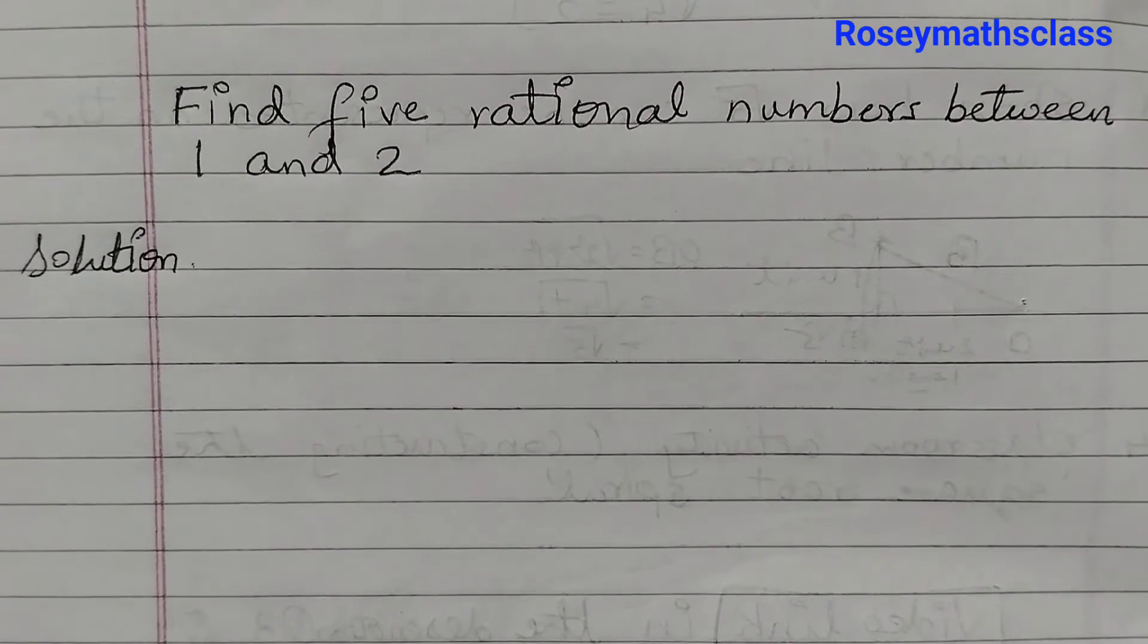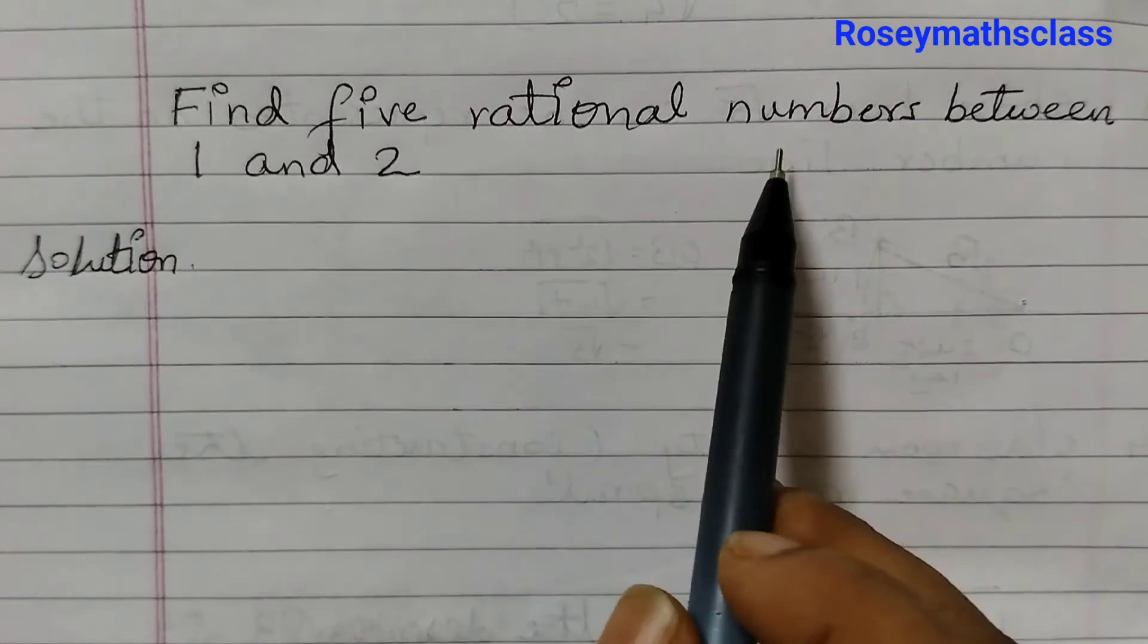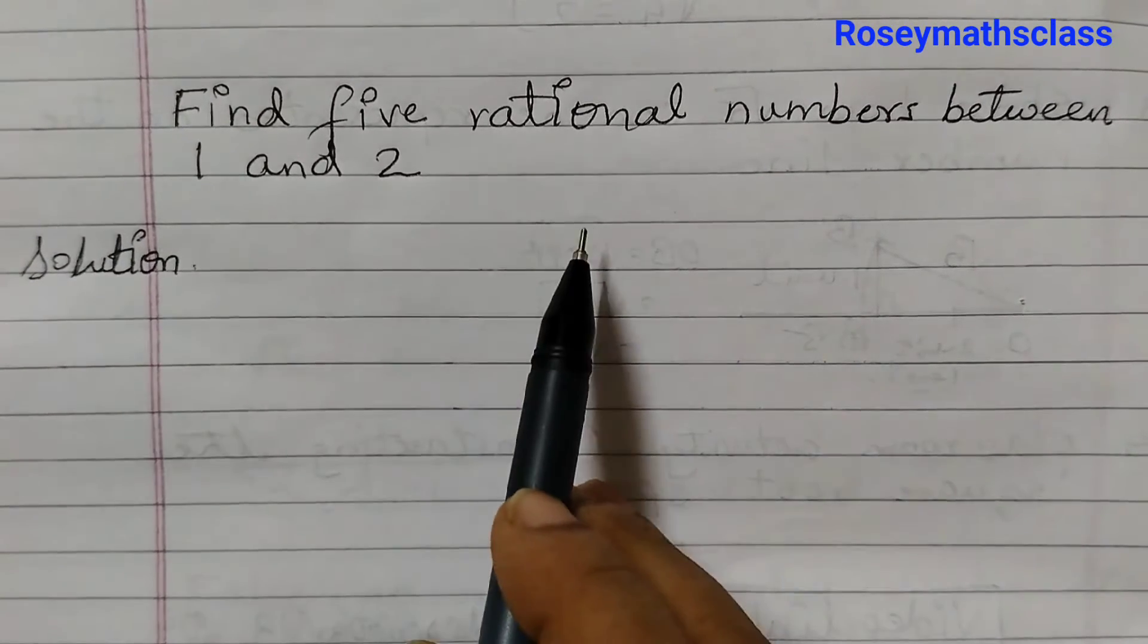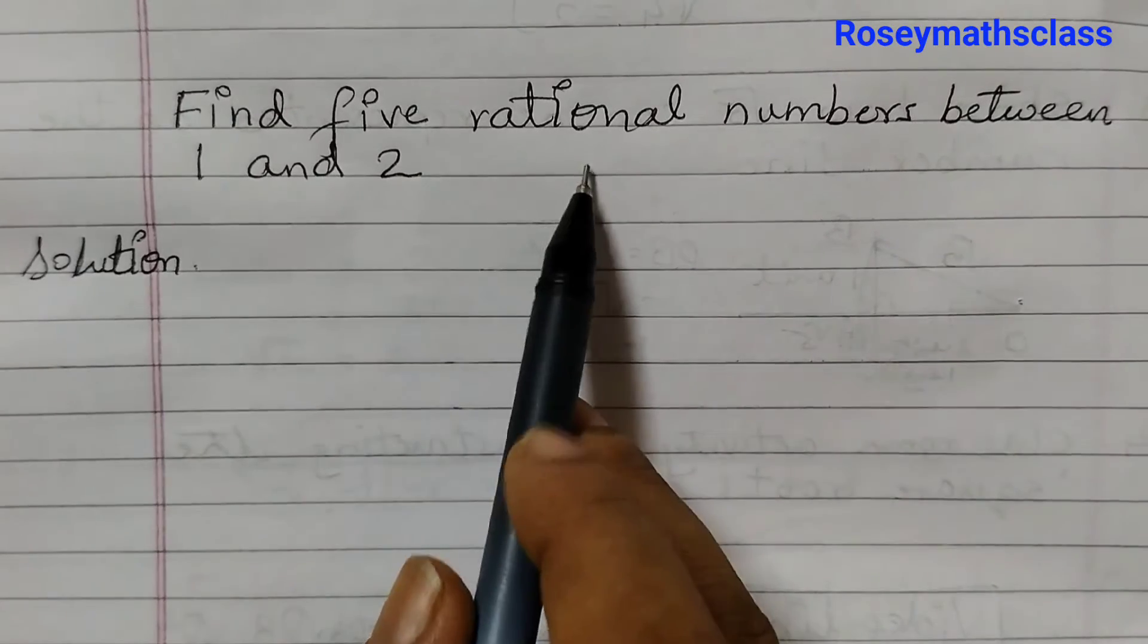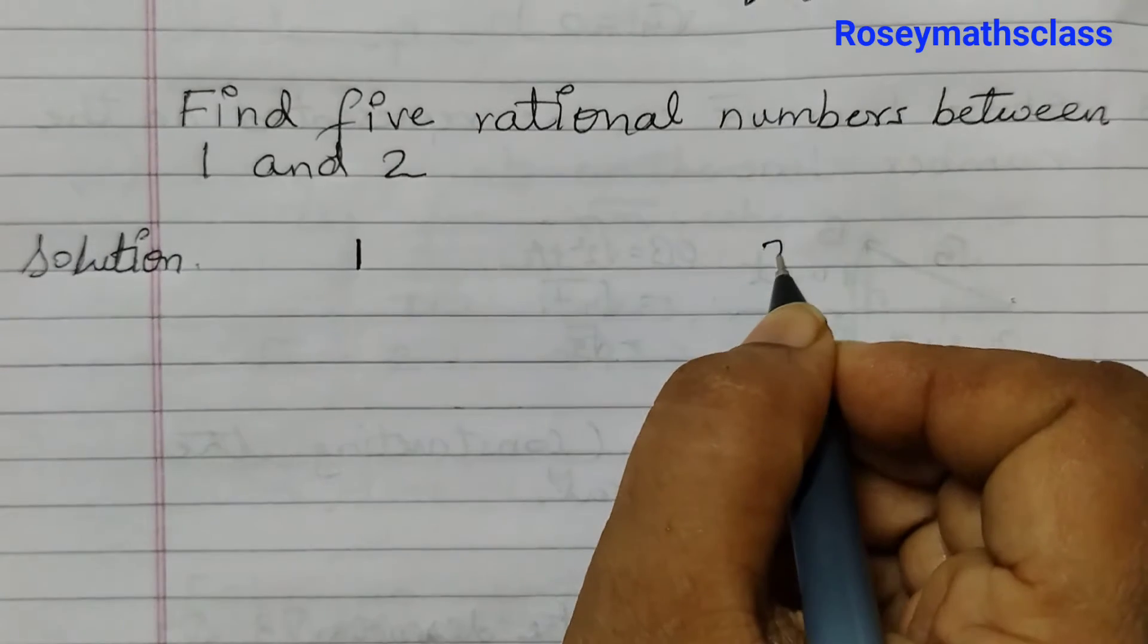Hello students, welcome back to Rosie Maths class. Find 5 rational numbers between 1 and 2.